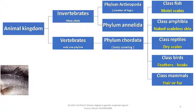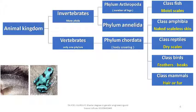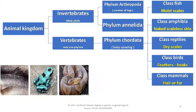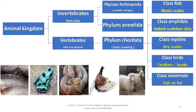Invertebrates are divided into many phyla, but we will study one of them called Arthropoda, which we will classify in the next slide. Vertebrates include only one phylum called Chordata. Phylum Chordata is subdivided into five classes according to body covering: Class Fish with moist scales, Class Amphibia with naked scaleless skin, Class Reptiles with dry scales, Class Birds with feathers, and Class Mammals with hair or fur.